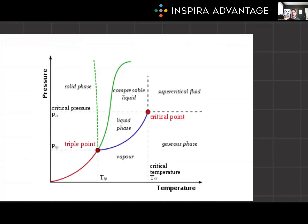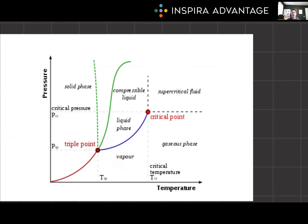Now I want to point out some key features of the phase diagram you need to know. First is the triple point, shown here. It's a unique condition where solid, liquid, and gas phases coexist in equilibrium. It's a singular point on the diagram where the boundaries of the three phases meet. Then we have the critical point.